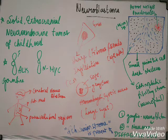It also shows the typical Homer Wright pseudorosette, with central neuropil surrounded by the tumor cells. It shows differentiation into ganglioneuroblastoma and ganglioneuroma. This differentiation is confirmed by Schwannian stroma being present.